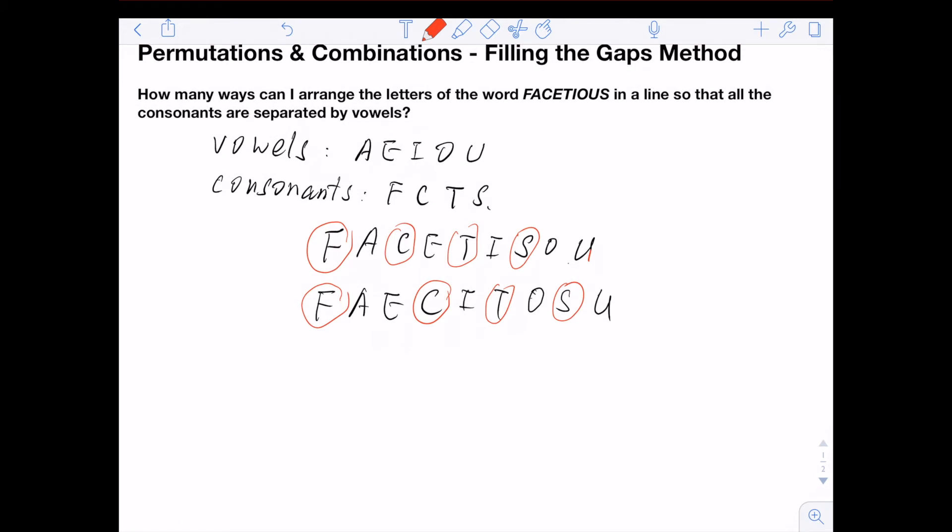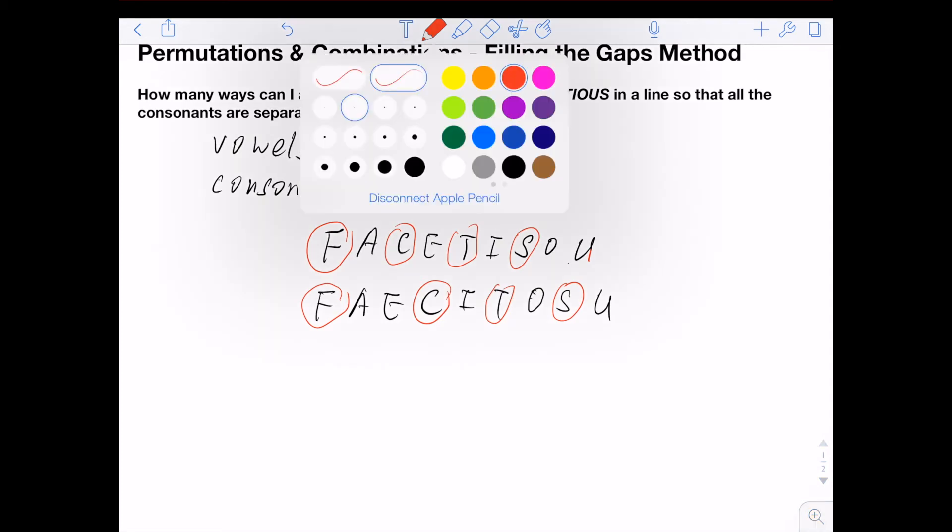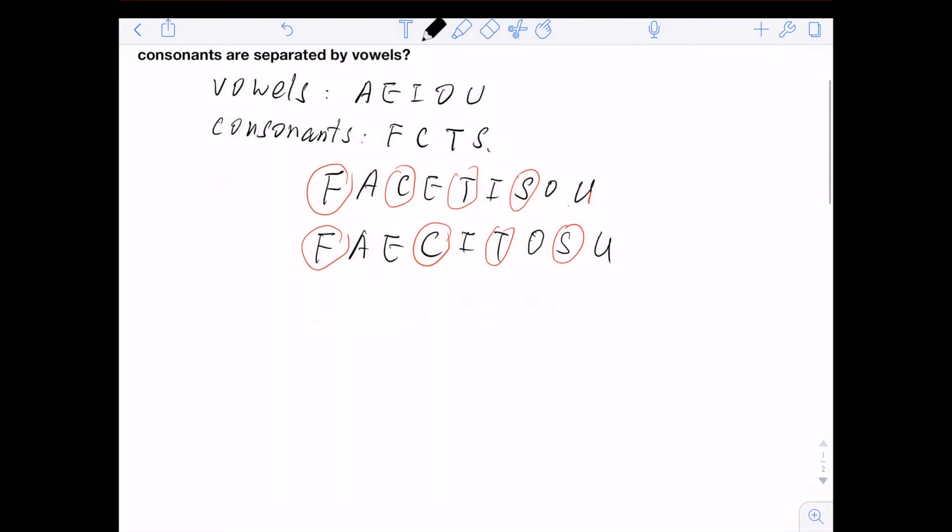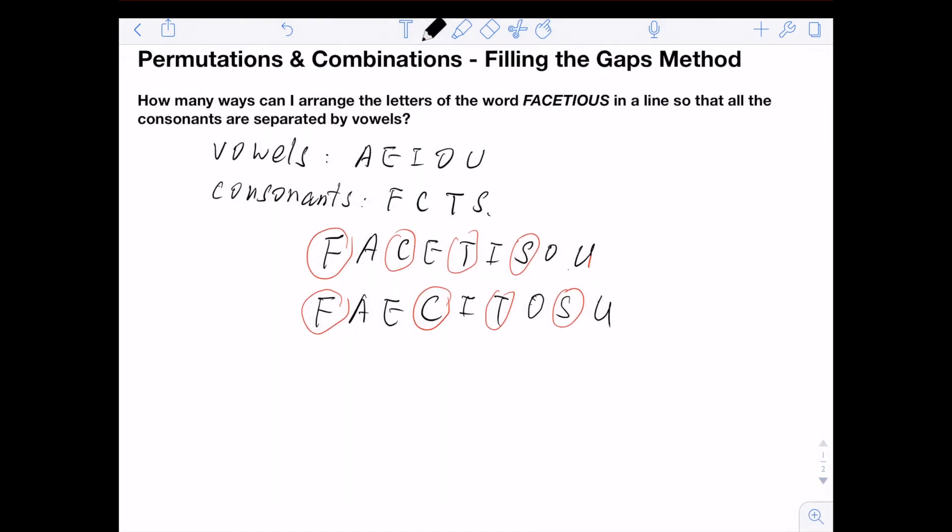So then how do we tackle all these problems in a good way? We're using the filling the gap method. What the filling gap method is, I fix my vowels first: A, E, I, O, U.